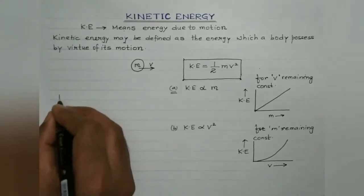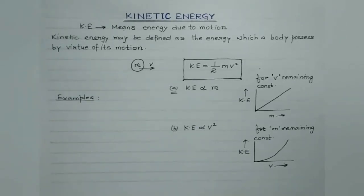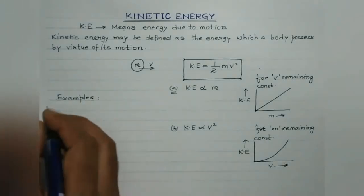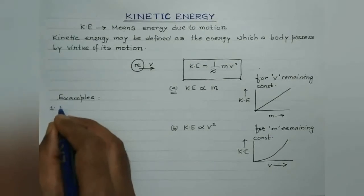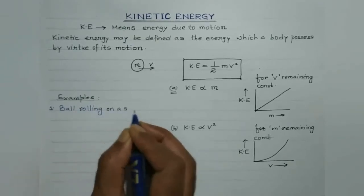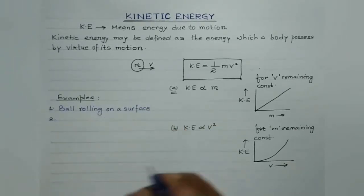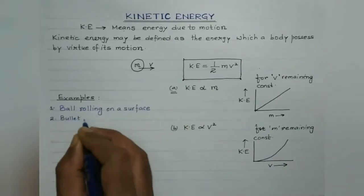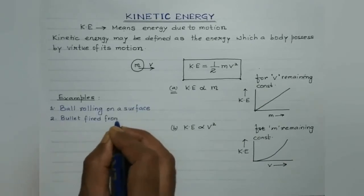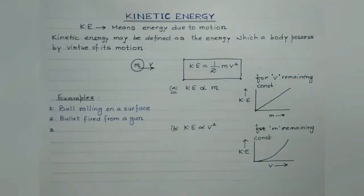Let us discuss some examples of kinetic energy. First, a ball rolling or sliding on a surface will definitely possess kinetic energy. Second, a bullet fired from a gun possesses kinetic energy by virtue of its motion. Remember, if the body is at rest, then no kinetic energy is possessed — a body at rest has zero kinetic energy.